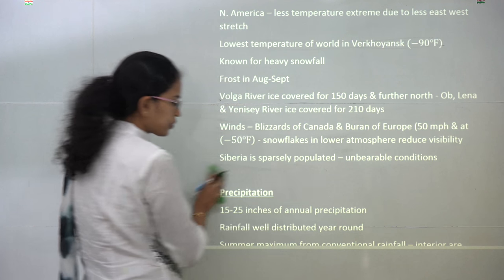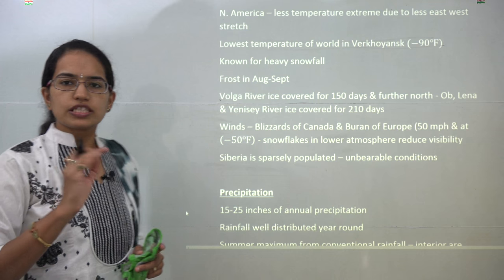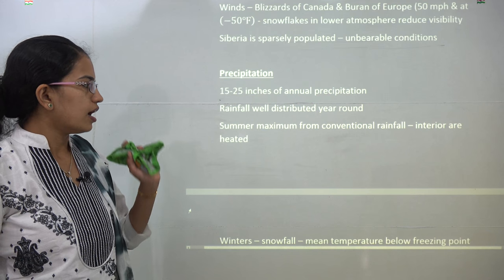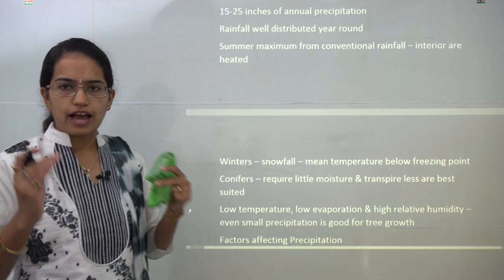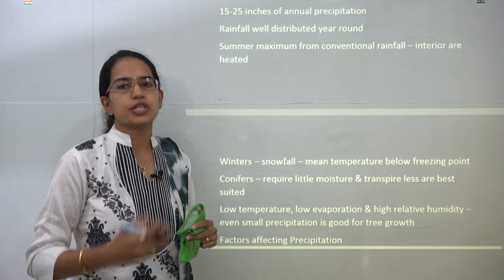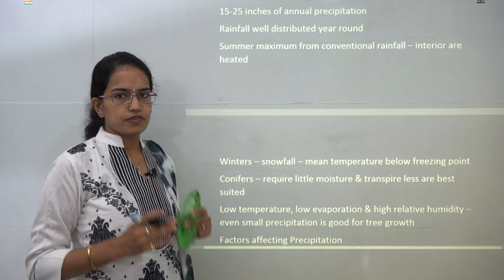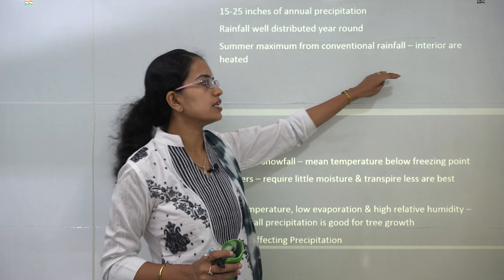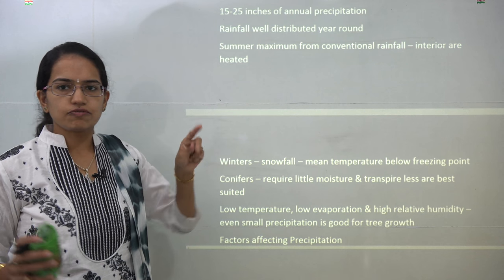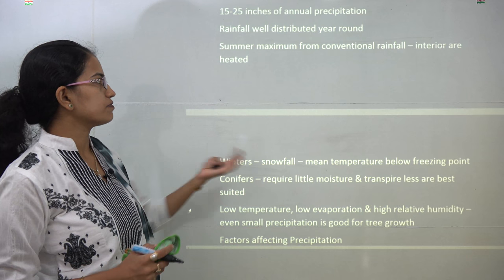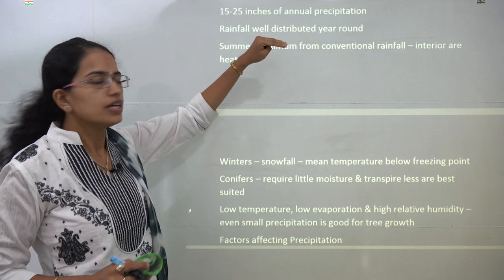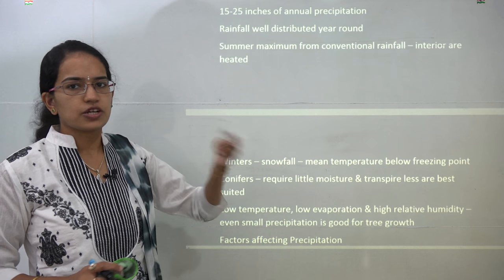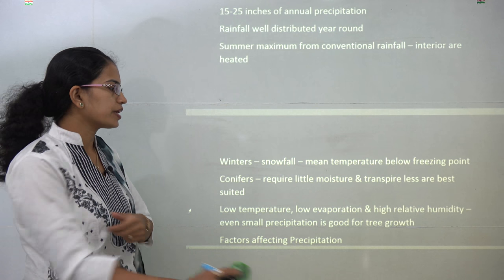The rainfall is usually 15 to 25 inches, distributed throughout the year. The reason for rainfall varies: in summers, maximum rainfall occurs due to convectional rainfall, as the interior of the region gets heated. In winter, you have snowfall when temperatures go below the freezing point.